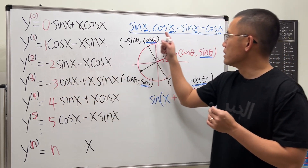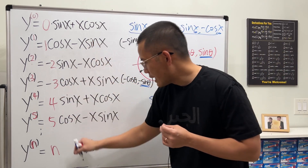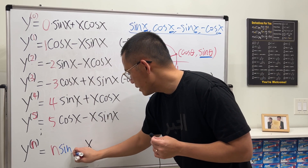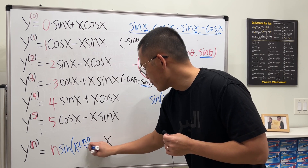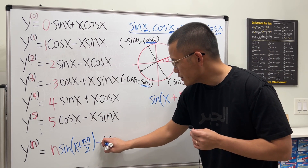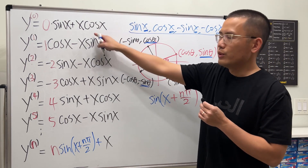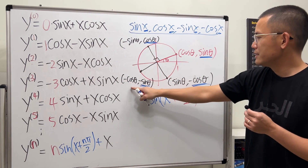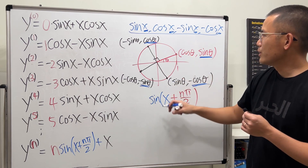This takes care of the sign changes automatically. So the full formula includes n as a coefficient multiplied by sine of (x + n·π/2). Now for the cosine part, we look at the cosine cycle: cosine, cosine, negative cosine, positive sine.